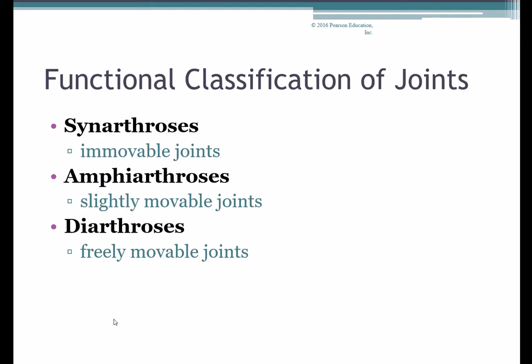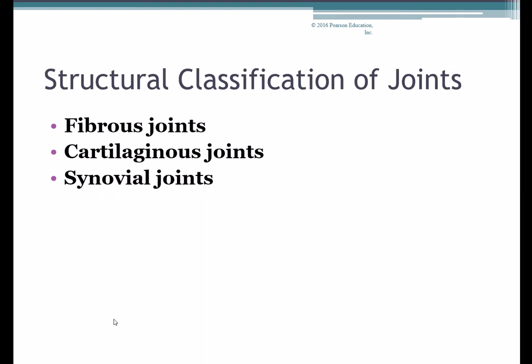In terms of functional classifications, we have three types. Synarthroses, or synarthrotic joints, are immovable — permitting virtually no movement. Amphiarthroses, or amphiarthrotic joints, are slightly movable — not permitting a lot of movement but allowing a little flexibility or give. And diarthroses, or diarthrotic joints, are freely movable — movement is not restricted in any way.